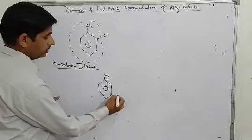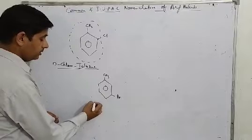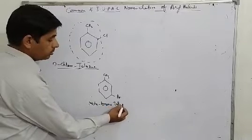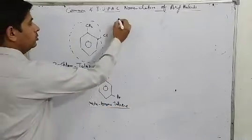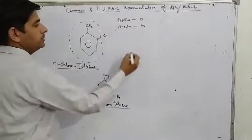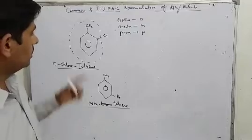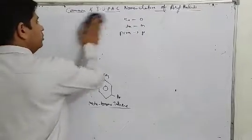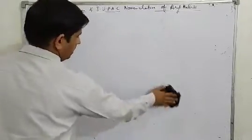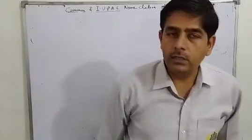If we have CH3 and Br, since it is toluene, this is meta-bromotoluene. Remember: for ortho you can use 'o', for meta you can use 'm', and for para you can use 'p'. If a CH3 group is attached to benzene, you name it as a toluene derivative. This concludes the common system of nomenclature.